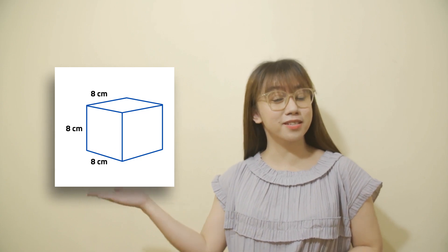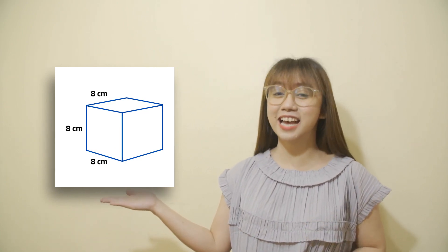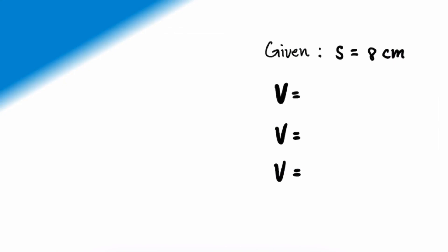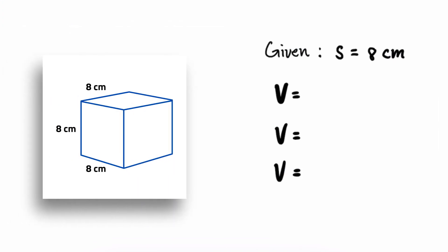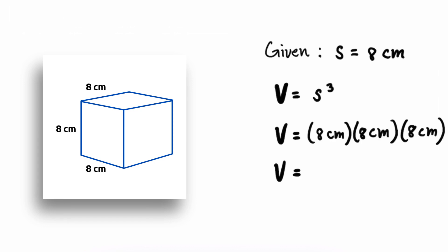How about the volume of this cube? Each side measures 8 centimeters. The given is S equals 8 centimeters. The formula is volume equals S cubed. Substituting: 8 cm × 8 cm × 8 cm. The volume of this cube is 512 cubic centimeters.